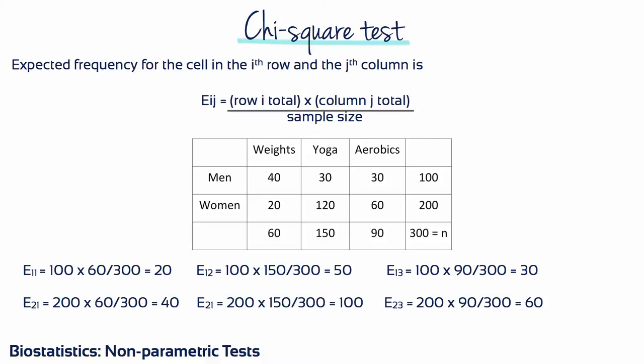This procedure is done for every cell to find the expected frequencies assuming independence. Notice that in calculating the expected cell frequencies, we take the row total divided by the sample size to obtain the proportion of men or women, and then multiply by the column total. This simplifies to the row total times the column total divided by the sample size. For instance, the expected cell frequency for women who do yoga is 200 times 150 divided by 300, which gives 100. So we would expect 100 women to prefer yoga if there is no relationship between sex and exercise type.